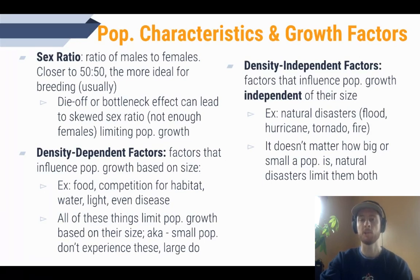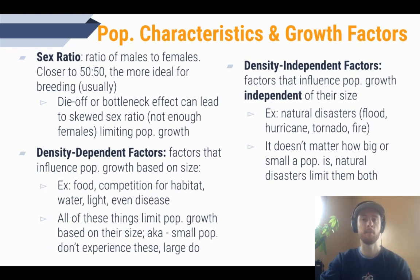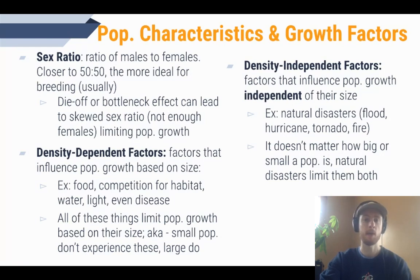Next we'll talk about factors that limit population based on density, and factors that limit population independent of density. Density-dependent factors limit population growth when individuals become too densely populated — increased competition for food, water, or habitat — and even disease can be density-dependent because it spreads more easily in dense populations. For example, a drought that limits food will impact a population of 5,000 deer far more significantly than one of 50 deer. Resources like food, water, habitat, and nesting sites are all density-dependent limiting factors.